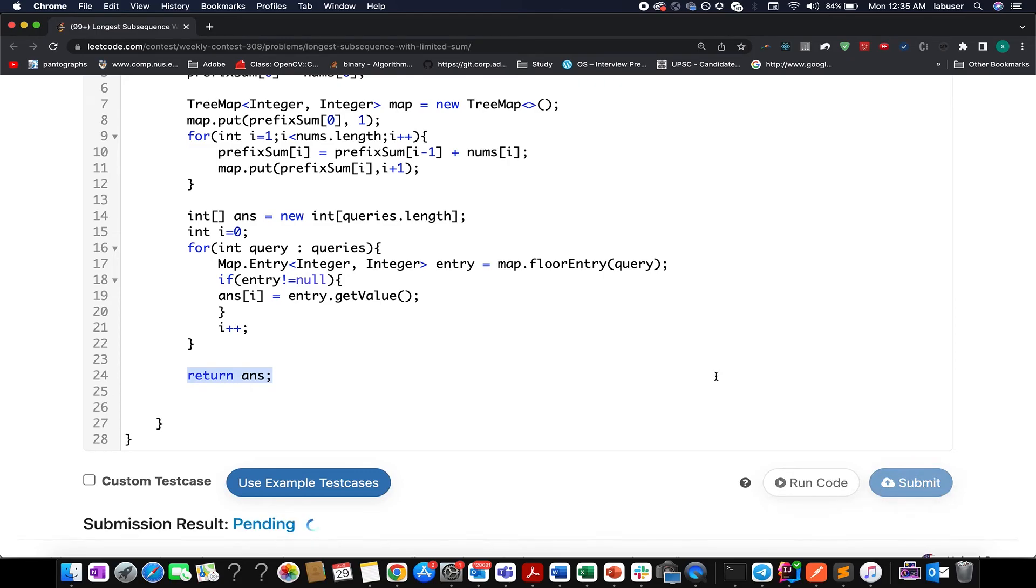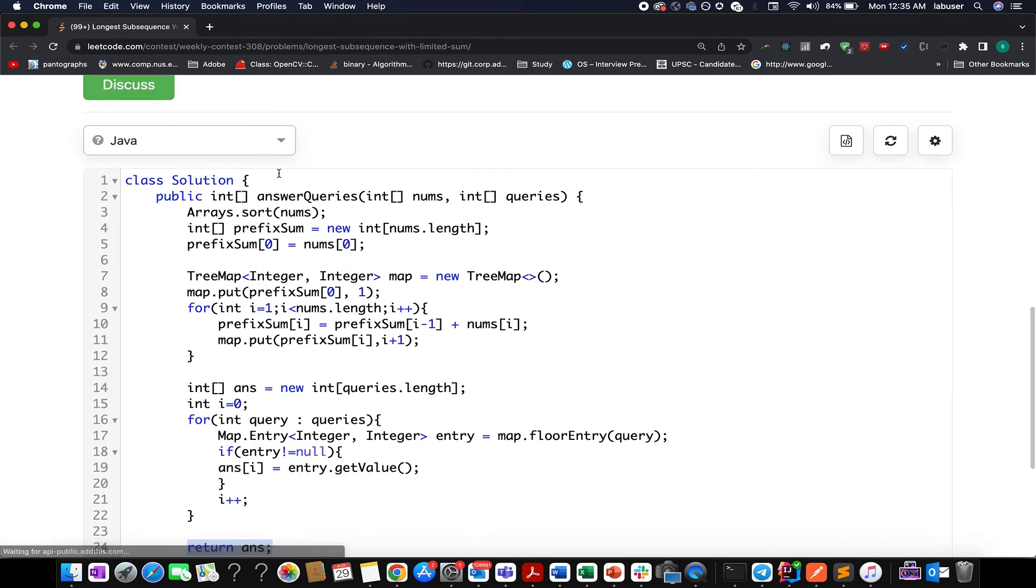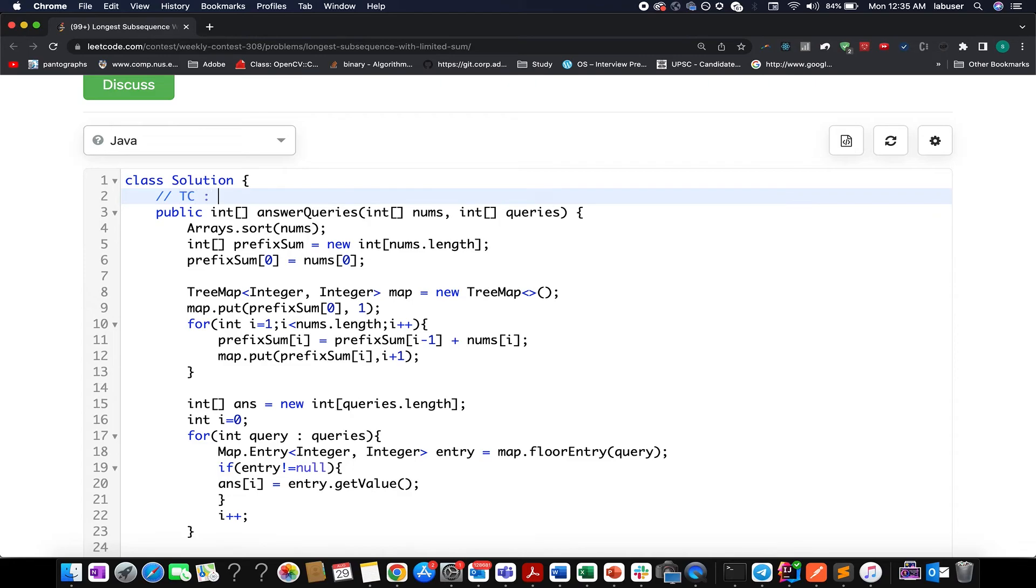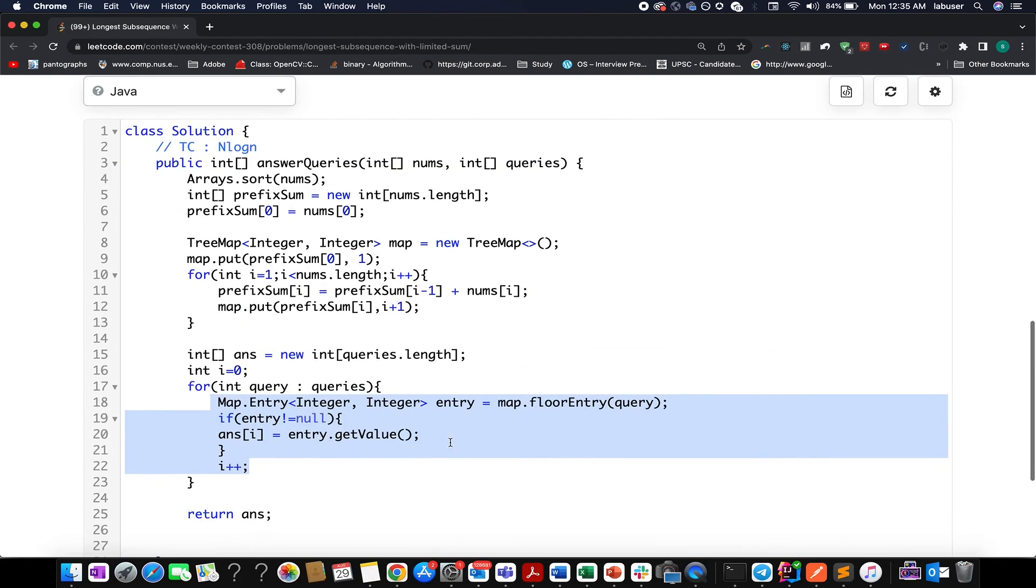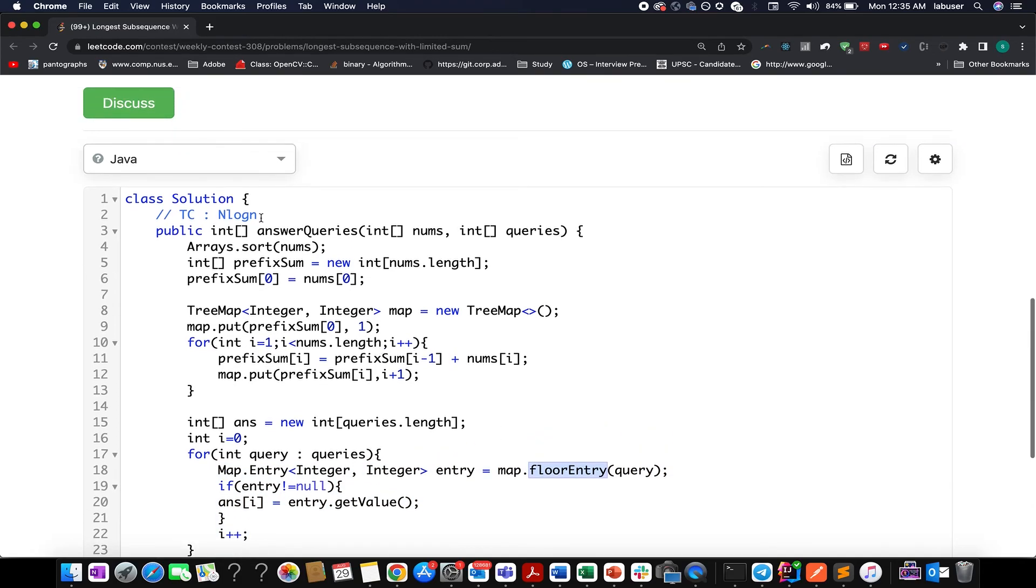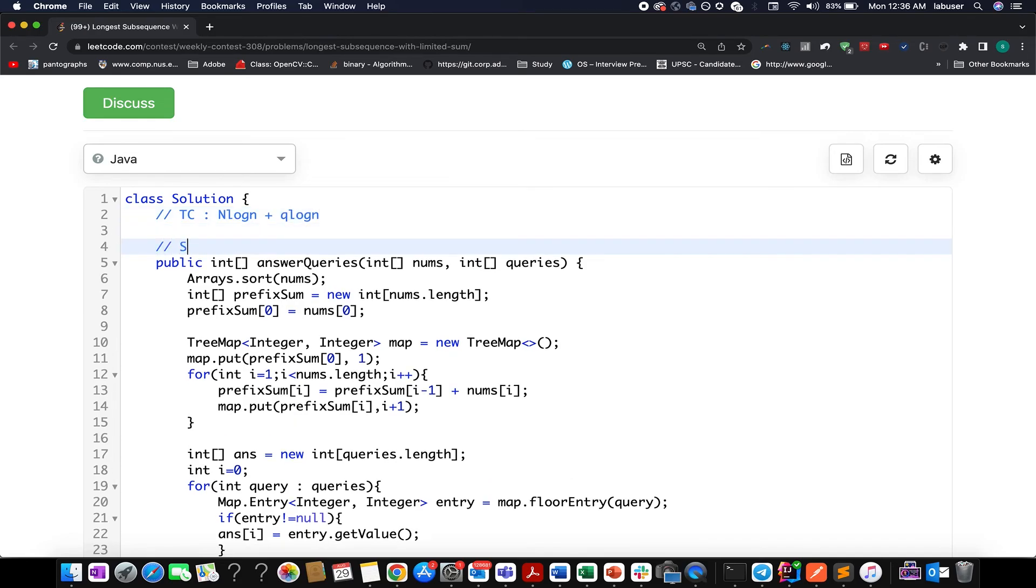Let's try submitting it. Accepted! The time complexity of this approach would be order of n log n and log n because we are sorting the input array and creating this map. The number of elements stored in this map equals the number of numbers in the input array. The overall complexity including extracting the floor values from the map would be n log n plus q log n. The space complexity would be order of n.